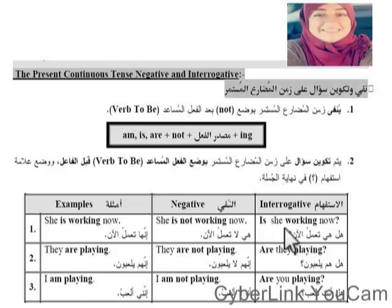All I did was put 'not' after 'is' — is not. For the question, I put the auxiliary verb first, then the subject, then the verb with -ing: 'Is she working now?' We now know the normal sentence, the negative (put 'not' after am/is/are), and the question (put am/is/are first according to the subject).